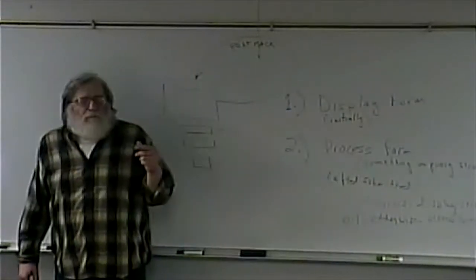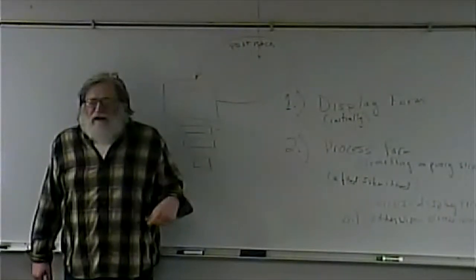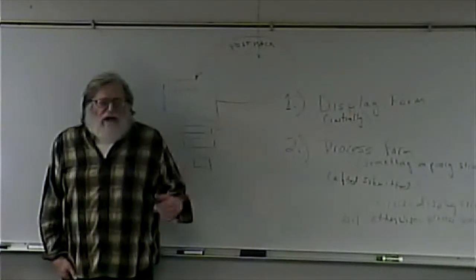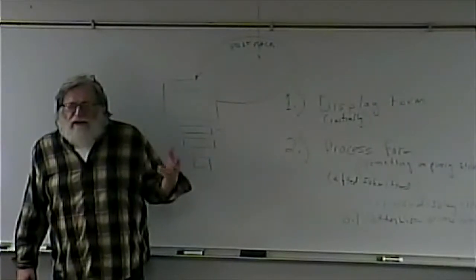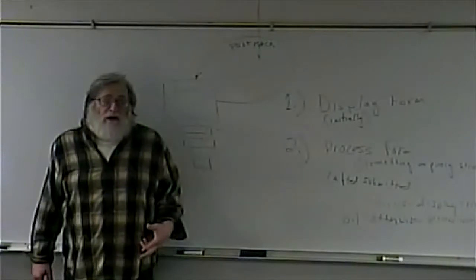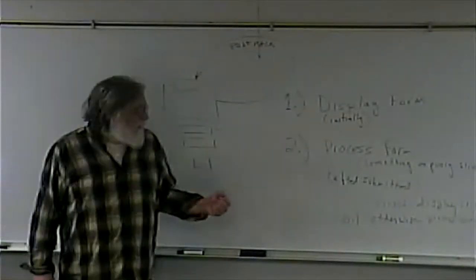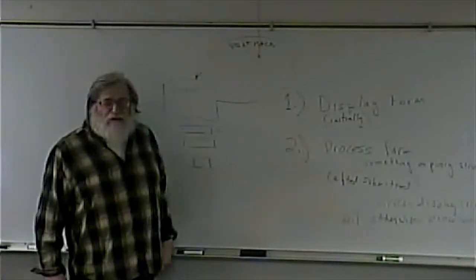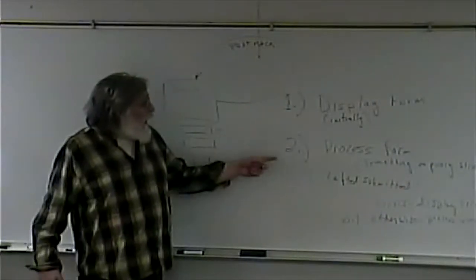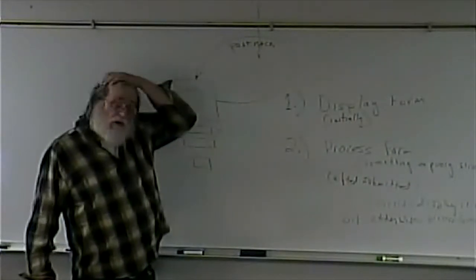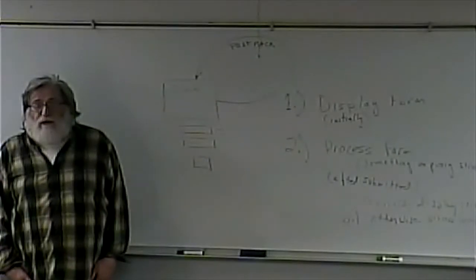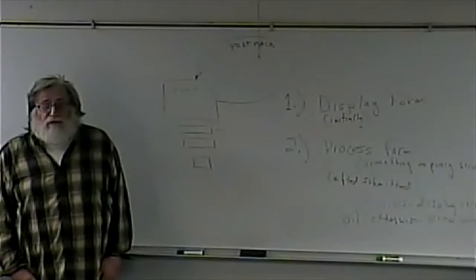I've been saying query string, but if we're using a POST method instead of GET, the data won't be on the query string — it will come across another way as part of the request. But you get the idea: if we see there's some form data, whether it's on the query string or part of the form collection, we know it's the second time through. How do we tell if the data is valid? We're going to have a function that looks at it and determines whether the form data is valid.